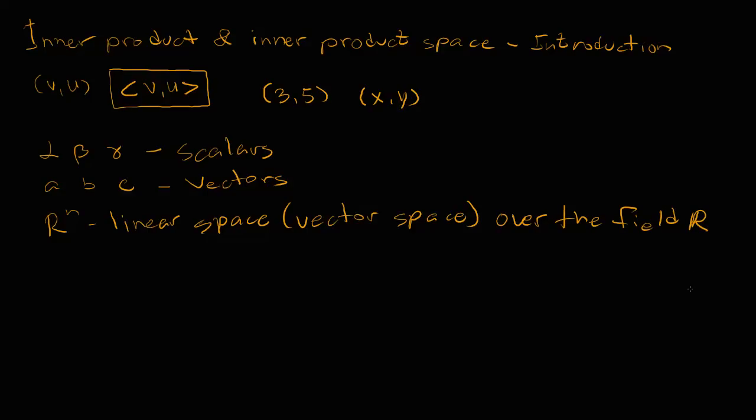Just to remind you the difference between a space and a field: a space contains mathematical structures like vectors, matrices, polynomials, etc. While a field contains all the elements from which those structures are built, like the real numbers or the complex numbers. I haven't given a strict formal definition of what a field and a space are, but for now this will be enough — maybe I'll get to it later.